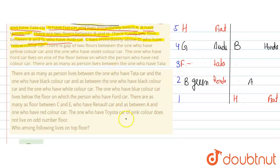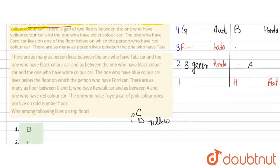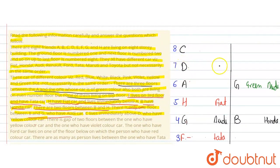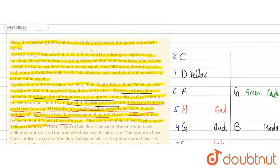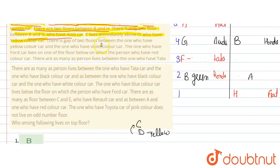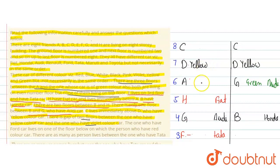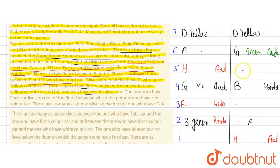Next, C lives immediately above D, and D has the yellow color car. So C and D occupy two consecutive positions. D gets the yellow car. Then, the condition states there is a gap of two floors between the one who has the yellow car and the one who has the violet color car.